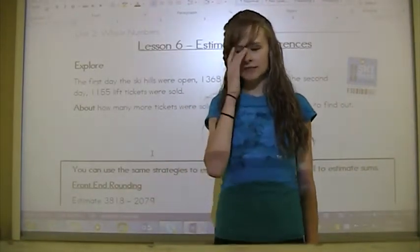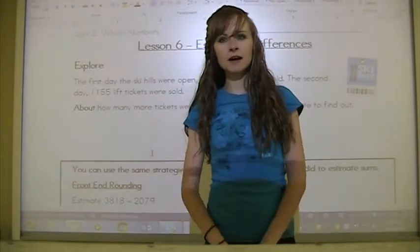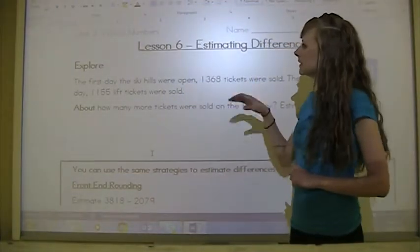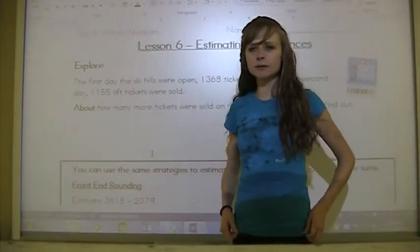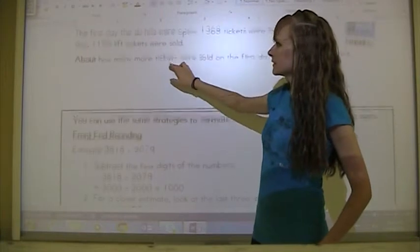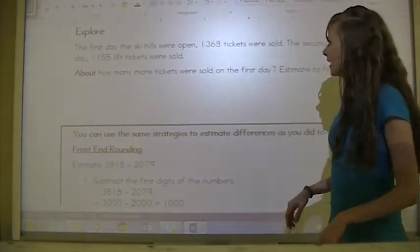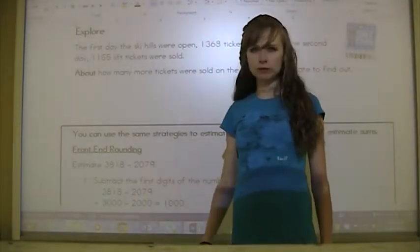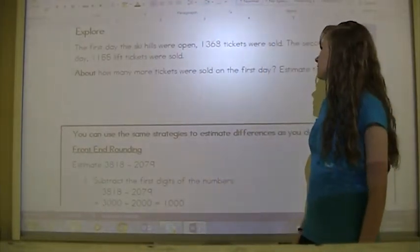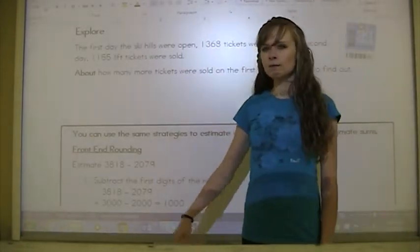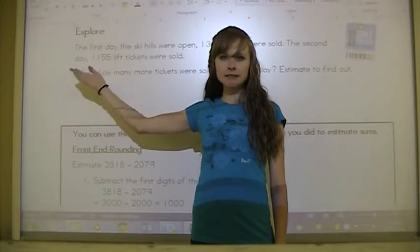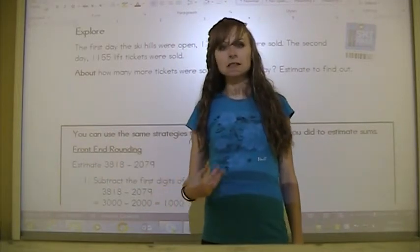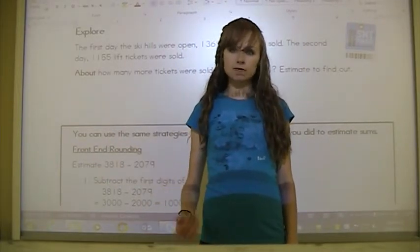This is a lesson on estimating differences, and it's a lot like the lesson on estimating sums, but instead of adding we're going to be subtracting. This is lesson six of unit two on whole numbers. The explore problem says: the first day the ski hills were open, 1,368 tickets were sold. The second day, 1,155 lift tickets were sold. About how many more tickets were sold on the first day? Estimate to find out. When a problem says the word 'about,' it's asking you just to estimate. It's not always going to say estimate to find out, but you're expected to know that means to estimate, not find the real answer.